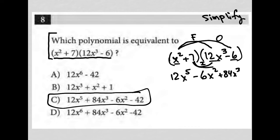And then the two last terms here, the L for FOIL, which is 7 times negative 6, which is minus 42.